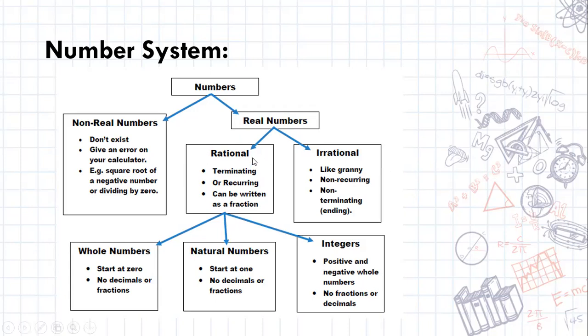Okay now rational numbers can be broken up into three different parts: your whole numbers, your natural numbers and your integers.